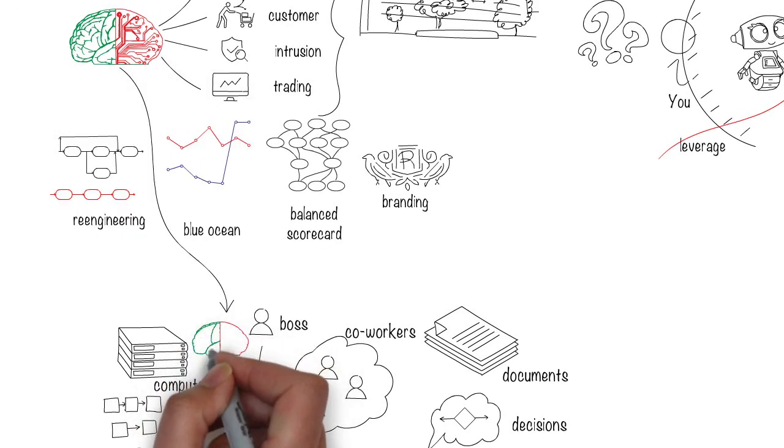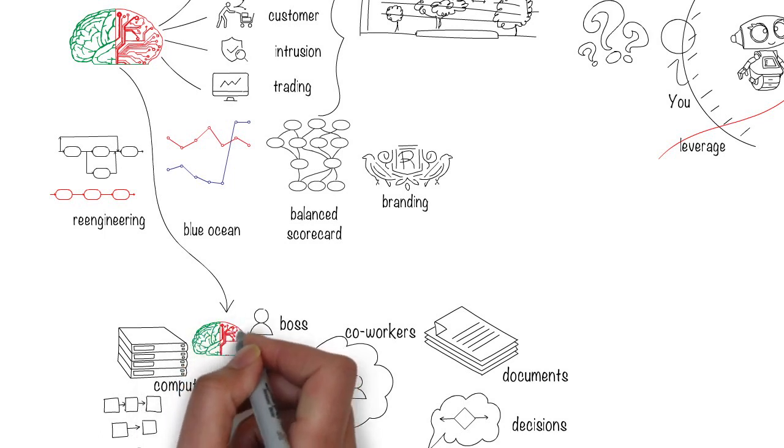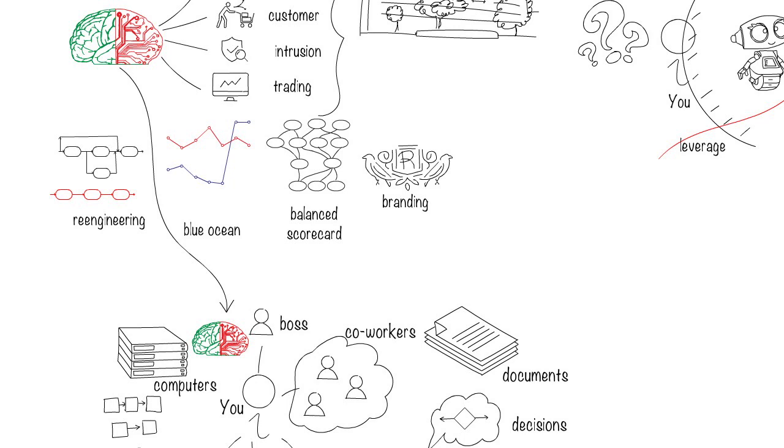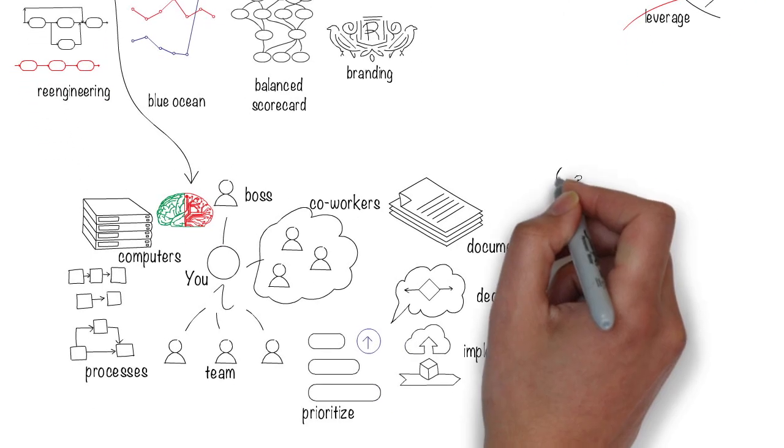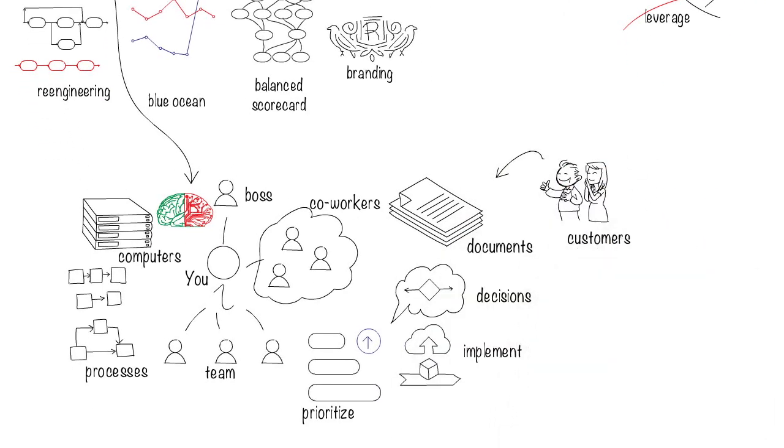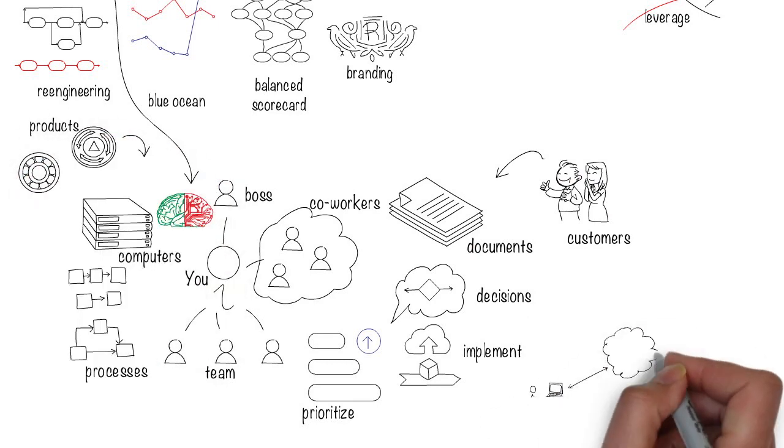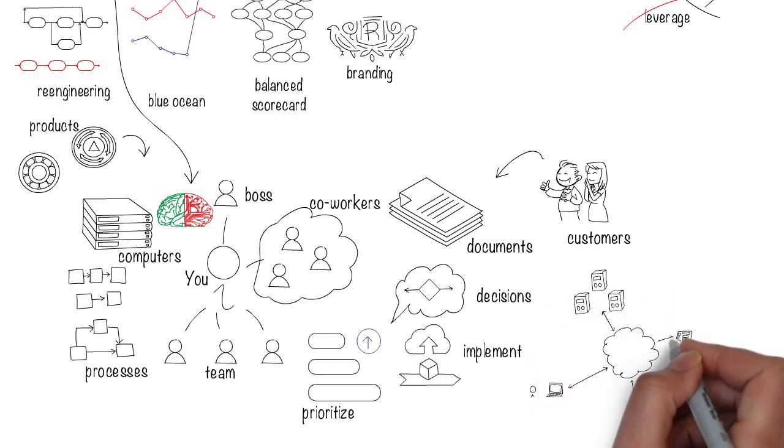Now in this mix, throw in artificial intelligence systems that can do more and more of what you do today. Now how will that change your work life? Consider other changes that might happen, such as the people you serve not needing your services anymore, new products being introduced, new technologies shifting what you do, and so on.